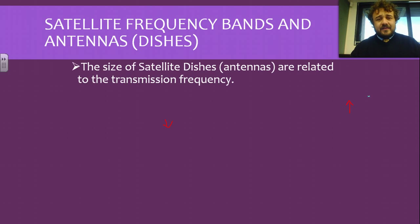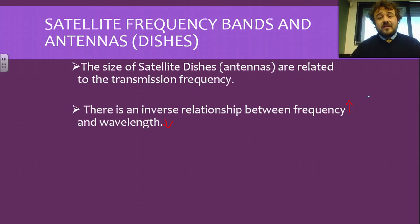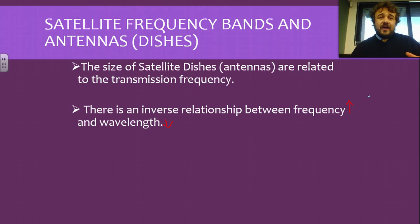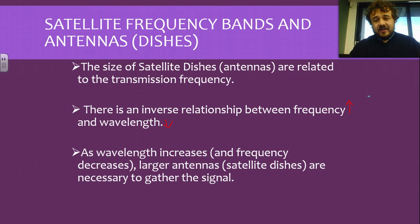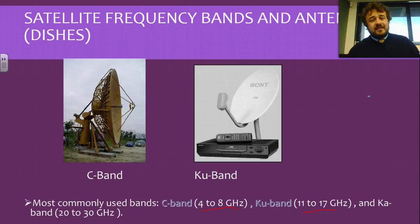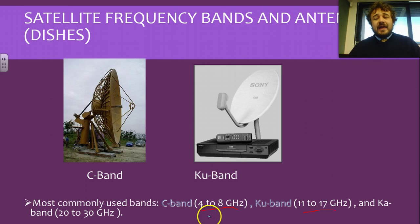The size of the satellite dish is related to the transmission frequency. If you've got a really big dish, it's for a really large wavelength, and that relates to frequency because of the inverse relationship — as frequency increases, wavelength decreases. So as frequency goes up, you get a smaller dish; as frequency decreases, you get a larger dish. Antennas, by the way, is the proper term for these dishes — they actually are antennas and they gather the signals. There are three bands: the C band, the KU band, and the KA band.